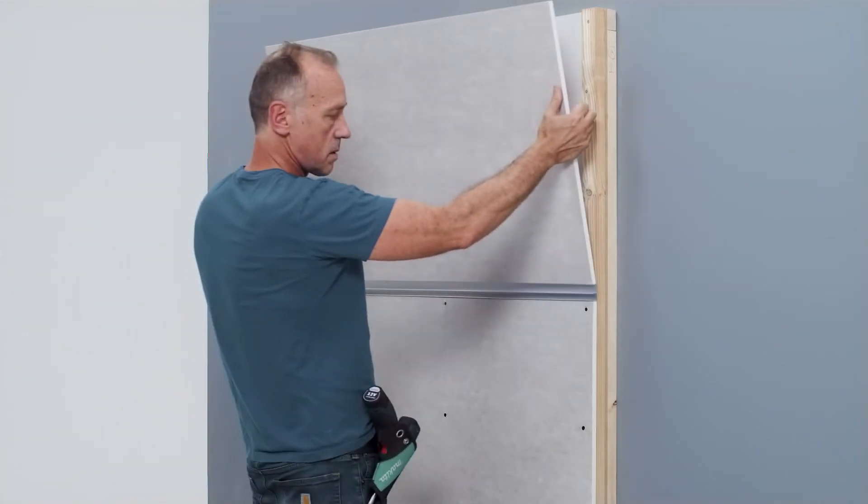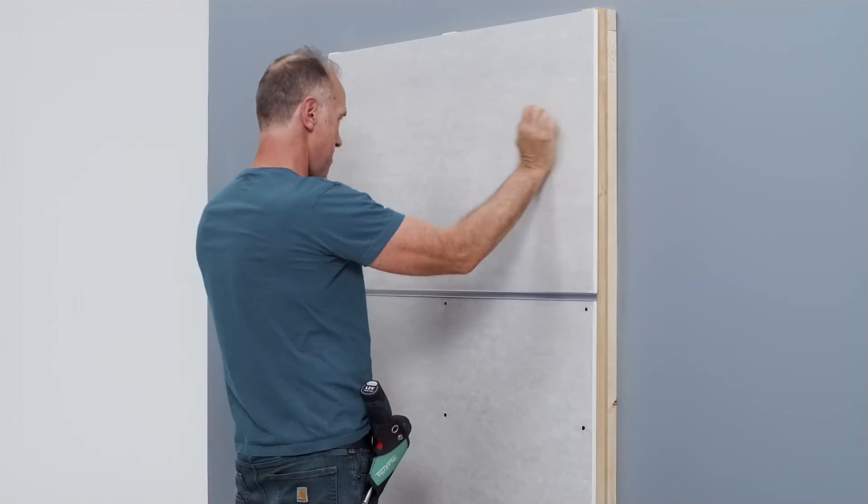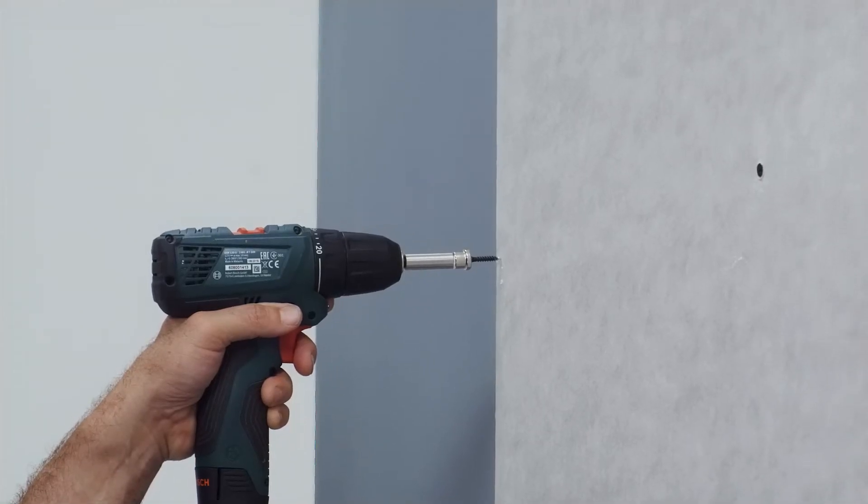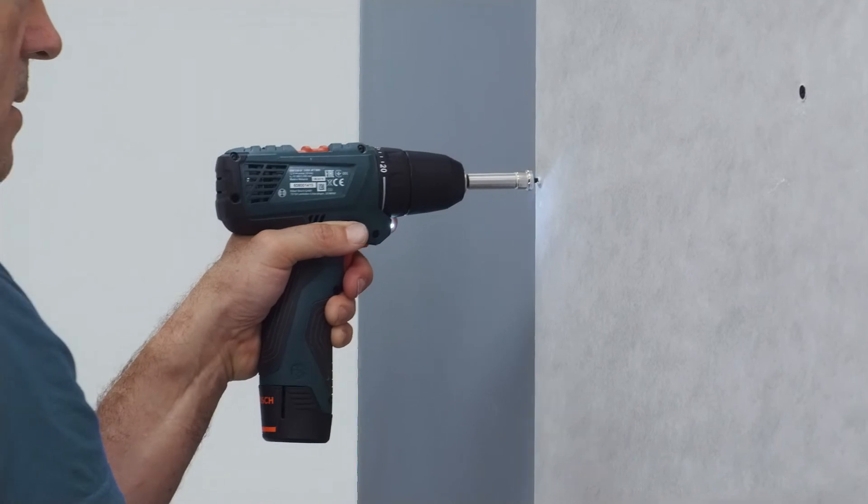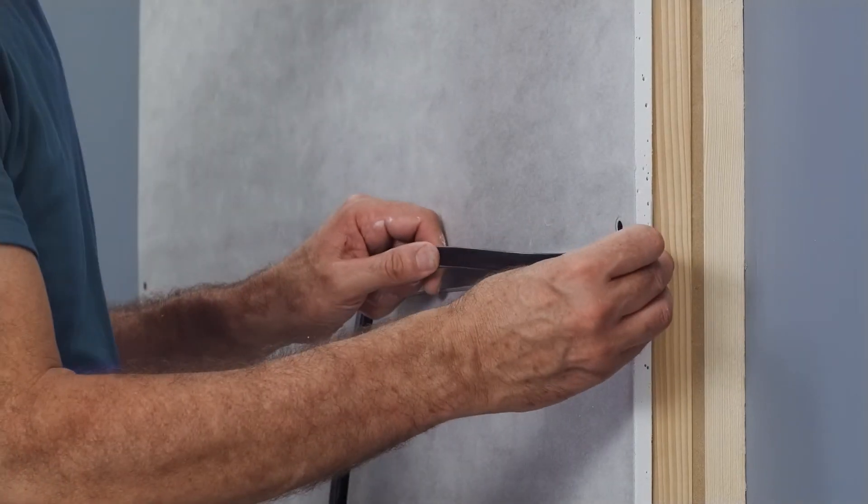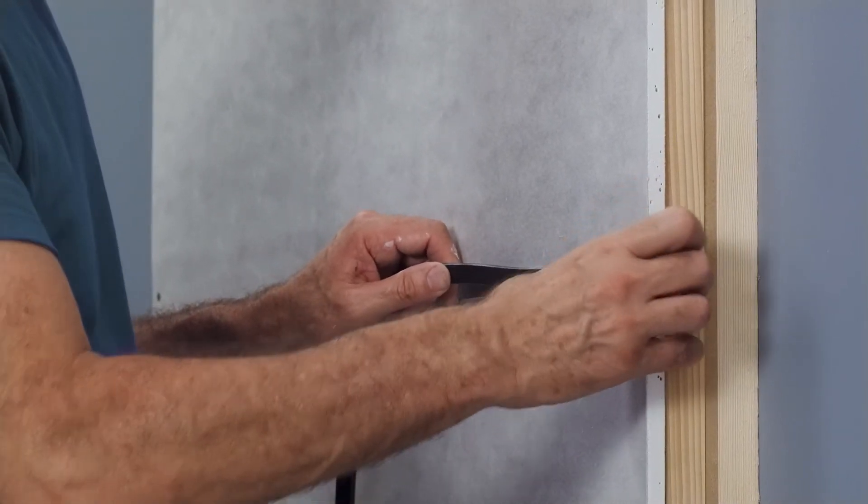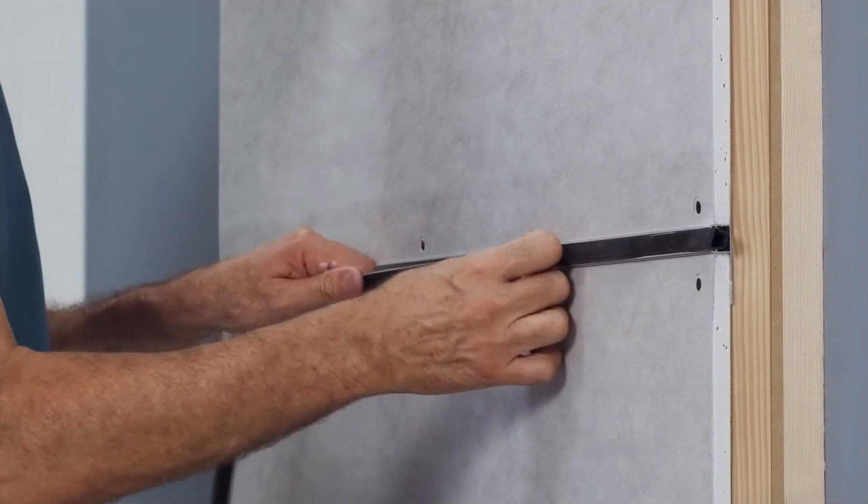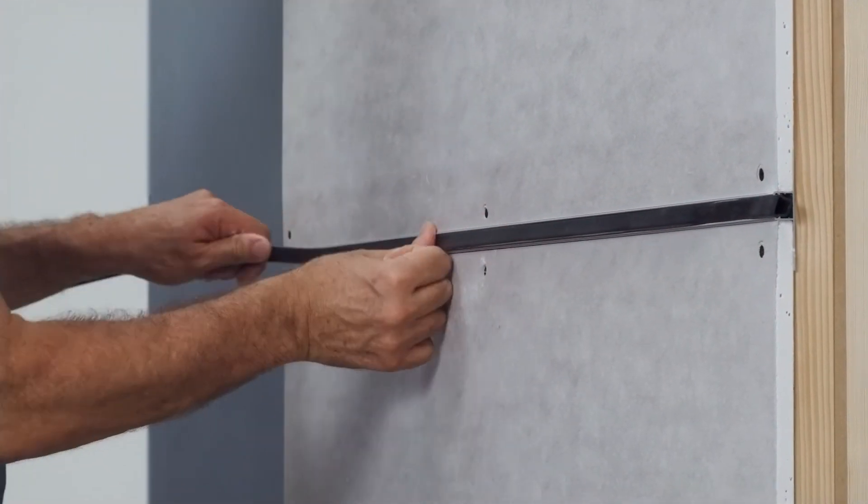Now the plasterboards are placed on both sides of the light profile and screwed to the support structure on both sides. To prevent contamination from getting into the aluminium profile during assembly, the robust protective cover made of soft PVC can be clicked into place.